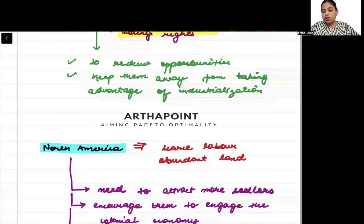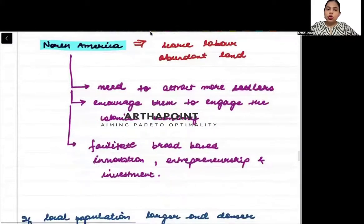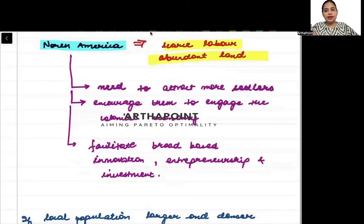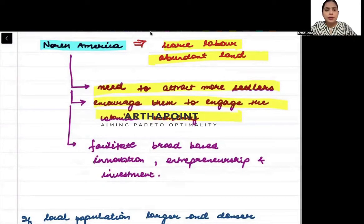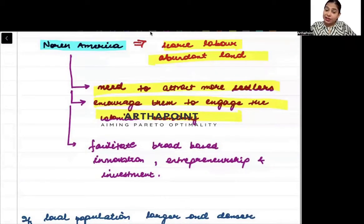If a country already had a lot of inequality, it would take a very long time to reap the benefits of industrialization. North America, for example, had scarce labor and abundant land. There was a lot of land but the labor was limited. So it wanted to attract more settlers and encourage them to engage in the colonial economy.